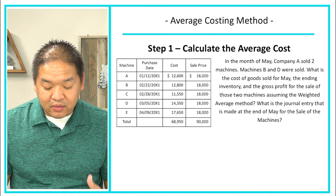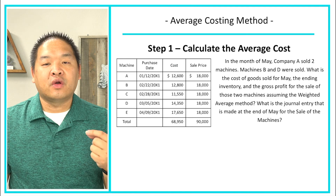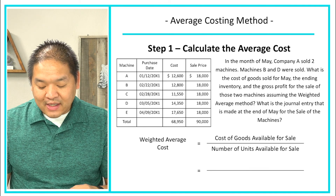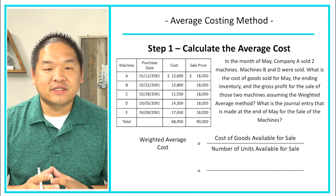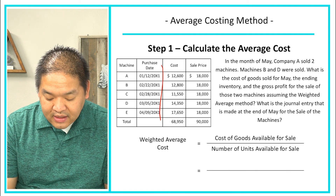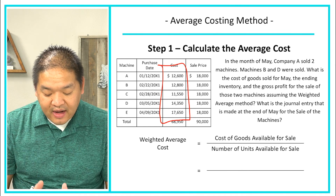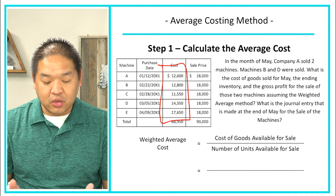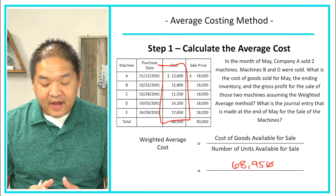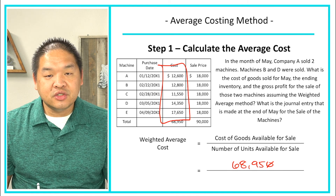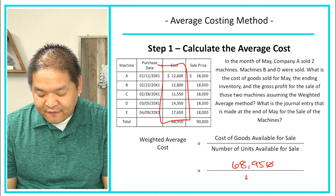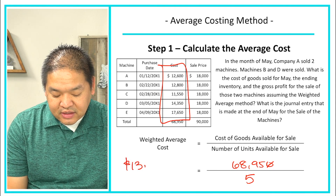Step one is to calculate the average cost. We use the weighted average cost equation: cost of goods available for sale divided by the number of units available for sale. We add up all the costs for the five units purchased, and we get $68,950, which is our cost of goods available for sale. We then divide that by five units — machines A, B, C, D, and E — giving us a weighted average cost of $13,790 per unit.